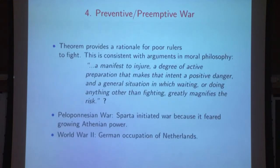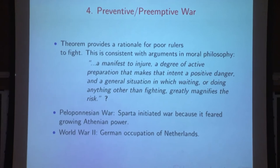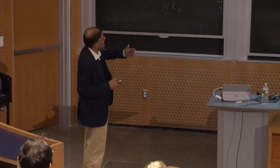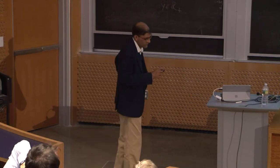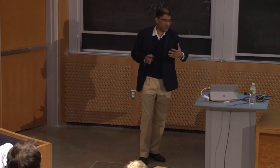This is the final implication of the theorem: you have an incentive for preemptive war. This connects to a well-known book by political philosopher Michael Walzer on just war. The theorem provides a rationale for even small, poor rulers attacking other rulers in equilibrium. Well-known examples of preventive war include the Peloponnesian War and the German occupation of the Netherlands — acting in anticipation of bad things happening to avoid them.